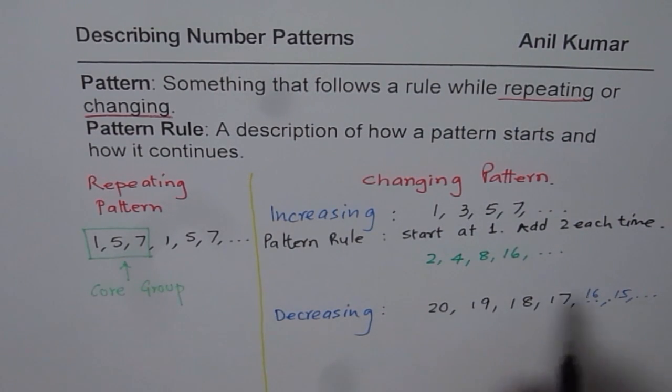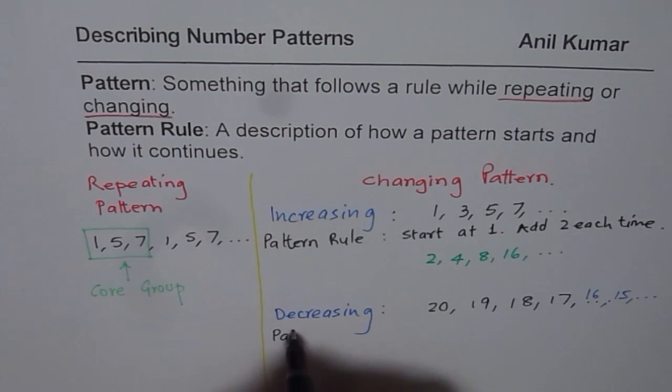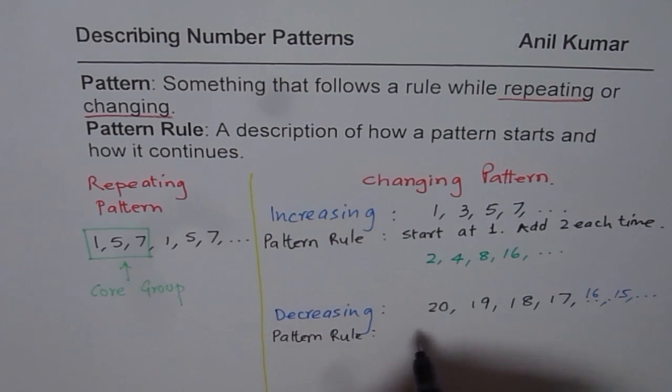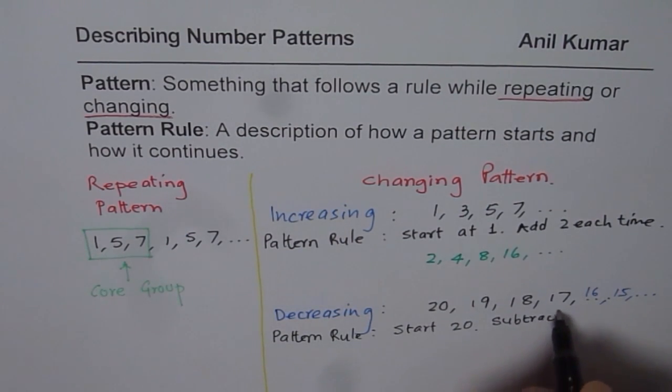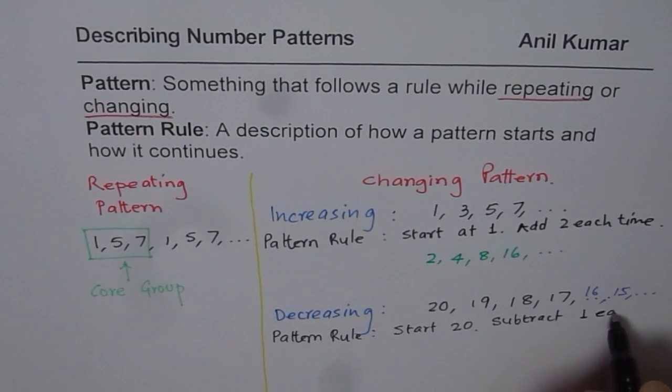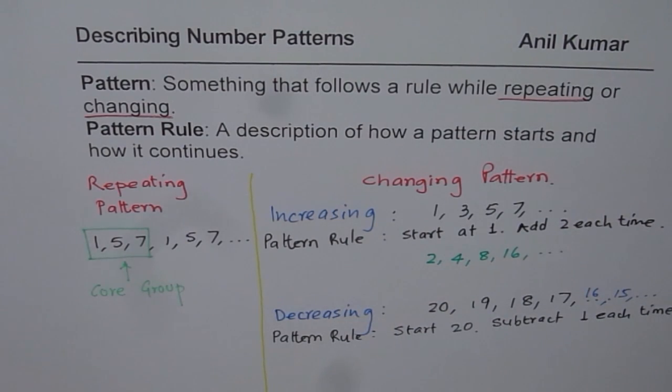In this particular case the pattern rule can be written as: Let me write it down for you. Start at 20, and then take away or subtract 1 each time. So that is how you could give an example of decreasing pattern and write a pattern rule for that.